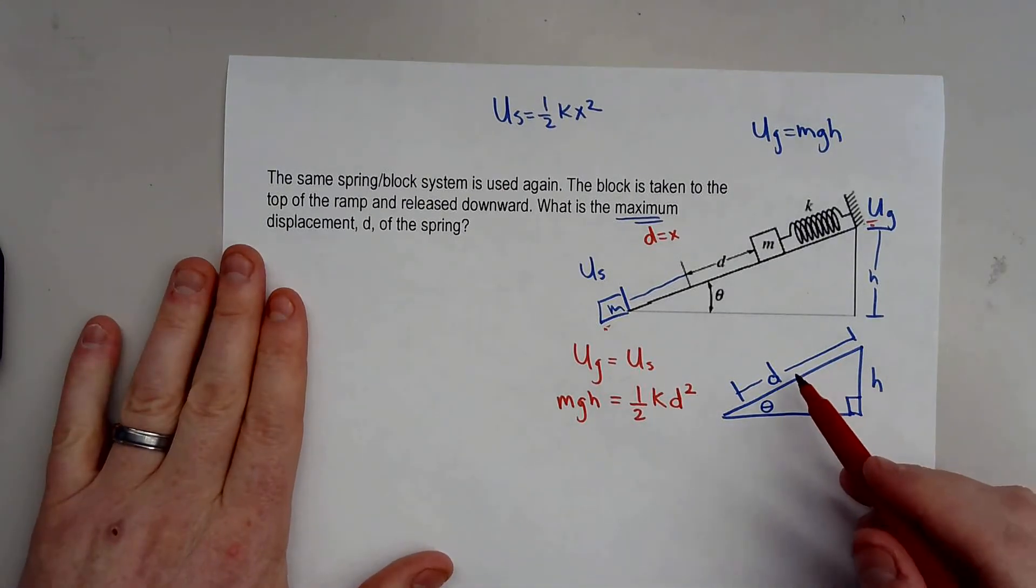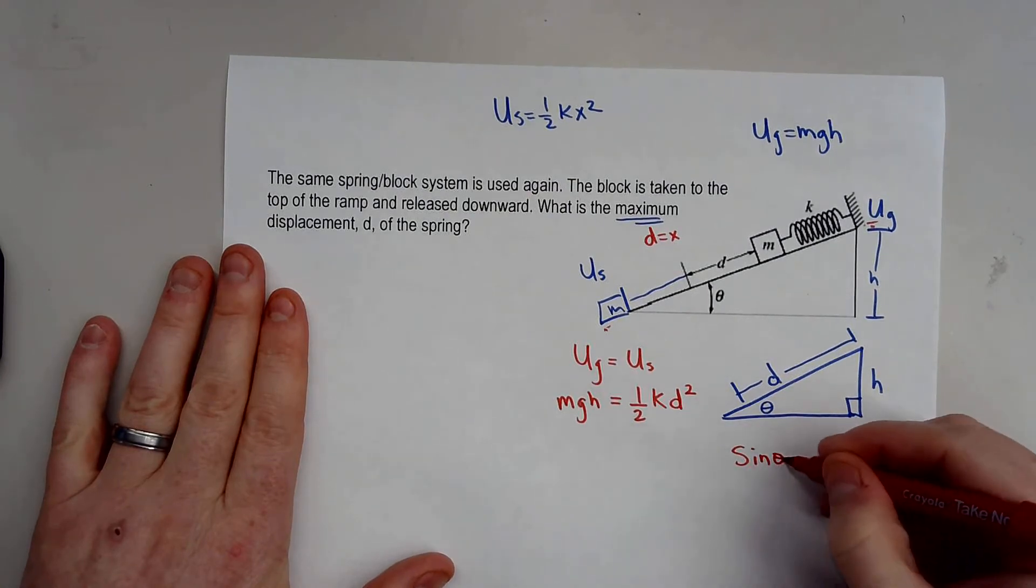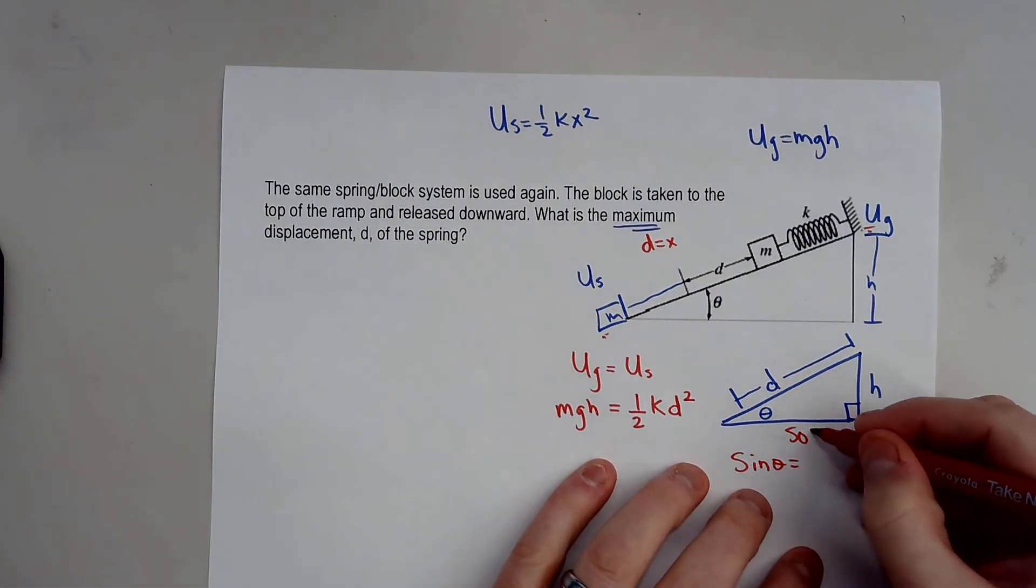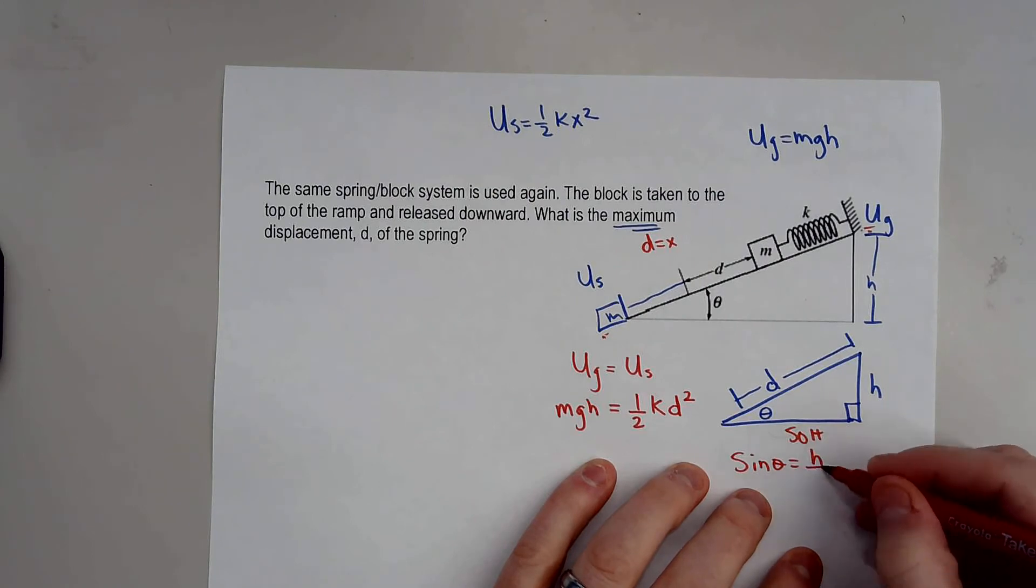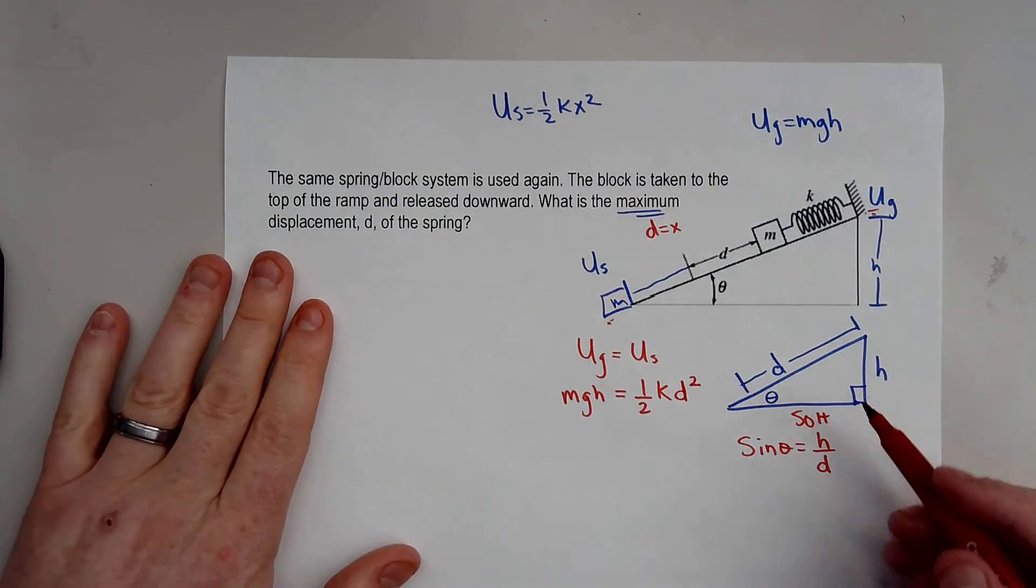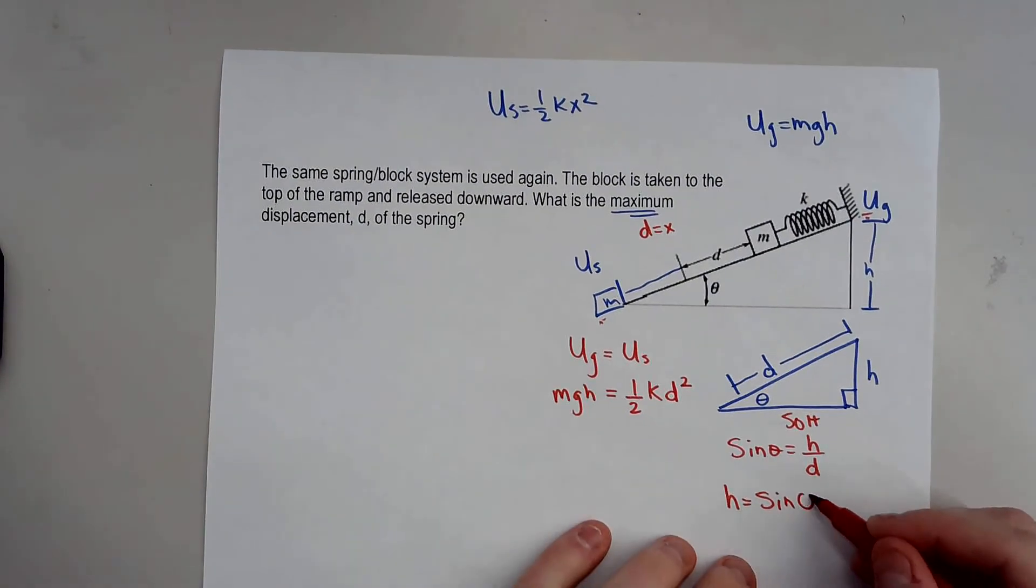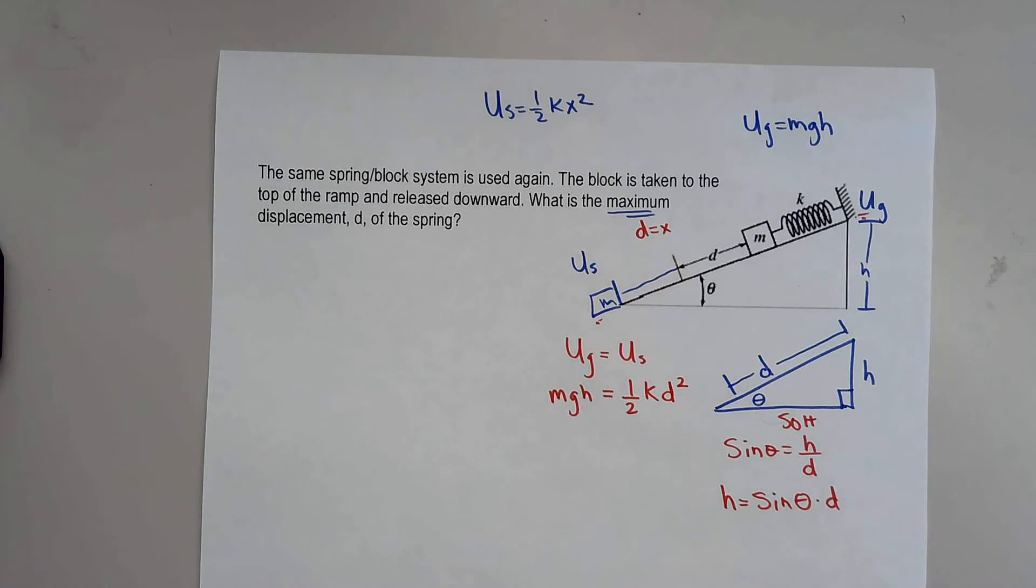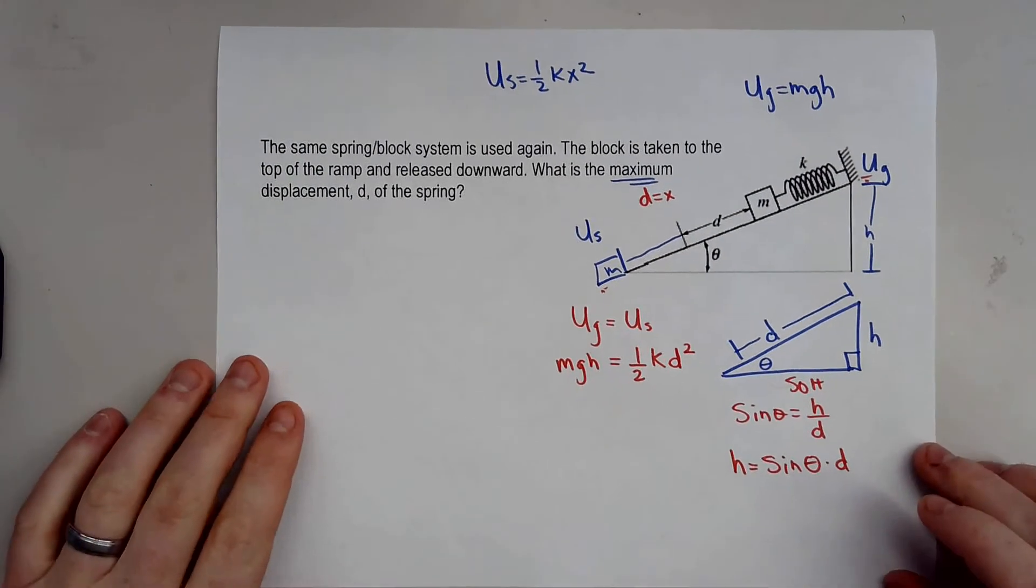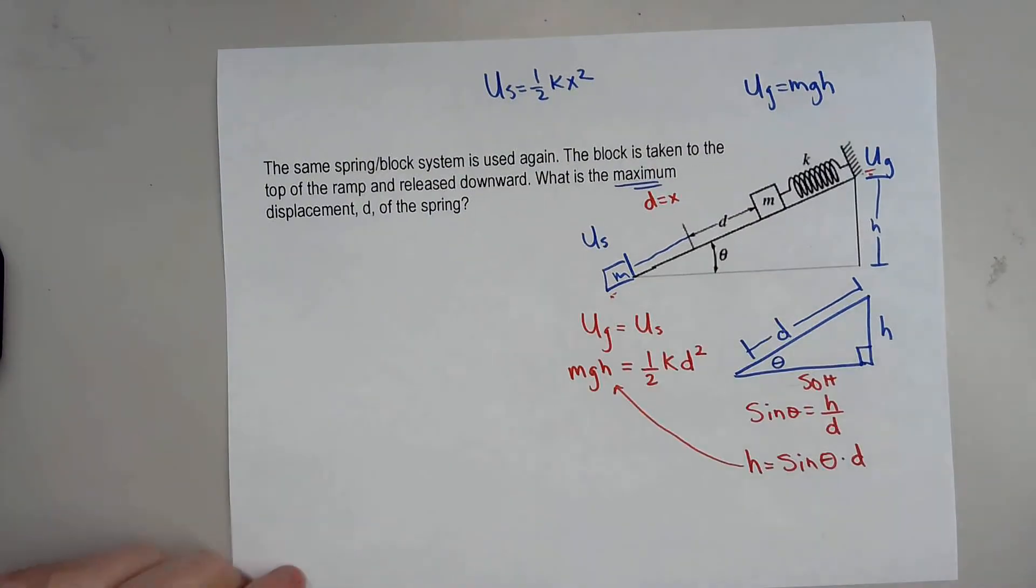Well you have the opposite over the hypotenuse, well that's just going to be sine. So remember SOHCAHTOA, so opposite over hypotenuse, and we can actually solve for our H here. In this case H will be equal to sine theta times some distance d. So we now know that where we have an H I can just take this and plug it in right there.